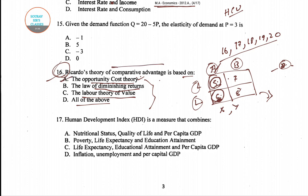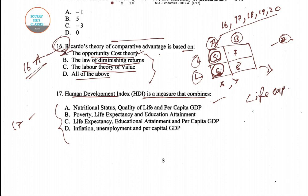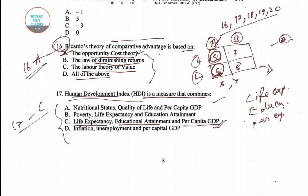Question number 17: the Human Development Index is a measure that combines — four options are given. We know HDI combines life expectancy, educational attainment, and per capita income (GDP). So option C is the right answer: HDI includes life expectancy, educational attainment, and per capita GDP.